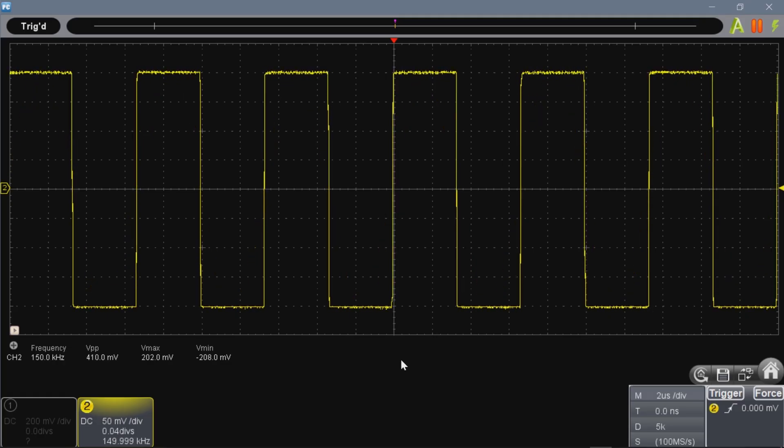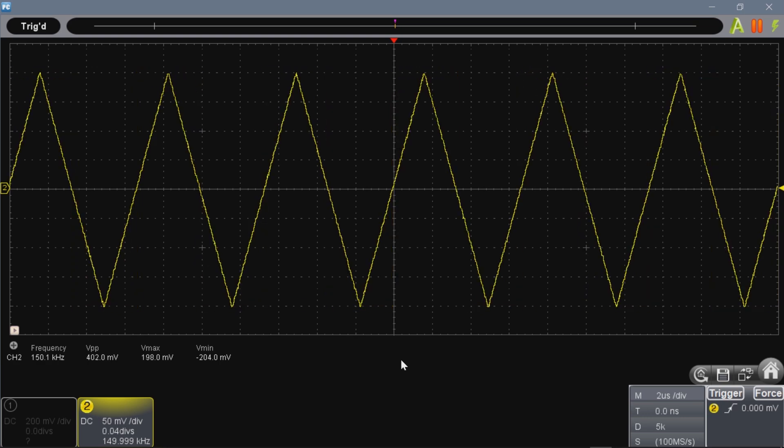Square waves might also be called rectangle or pulse. These are used to clock digital circuits. Ramp, triangle, and sawtooth are all pretty much the same and these are the kind of waveforms that an op-amp integrator might make.